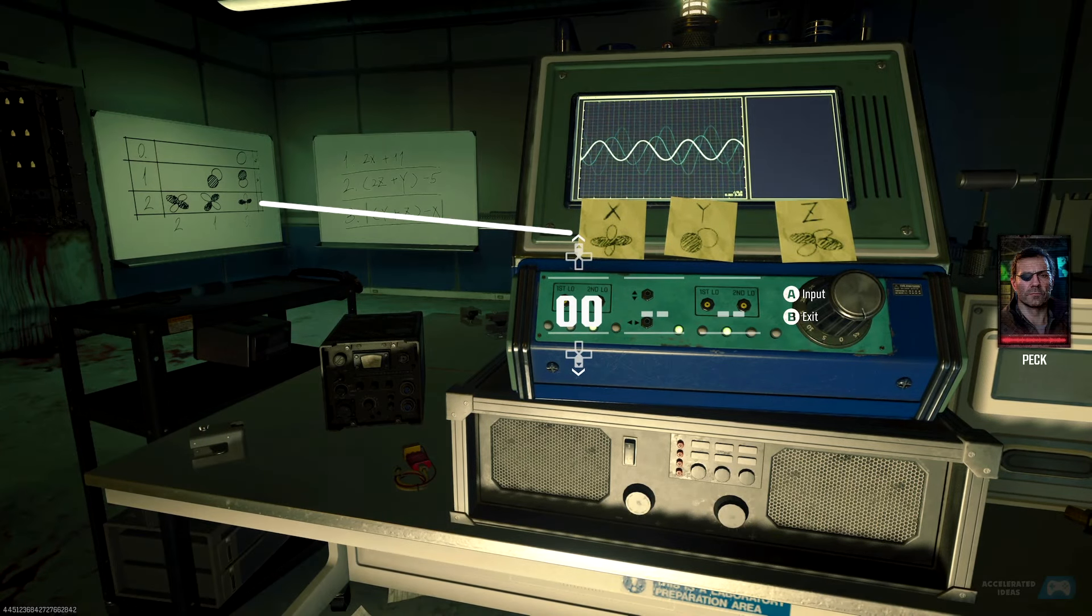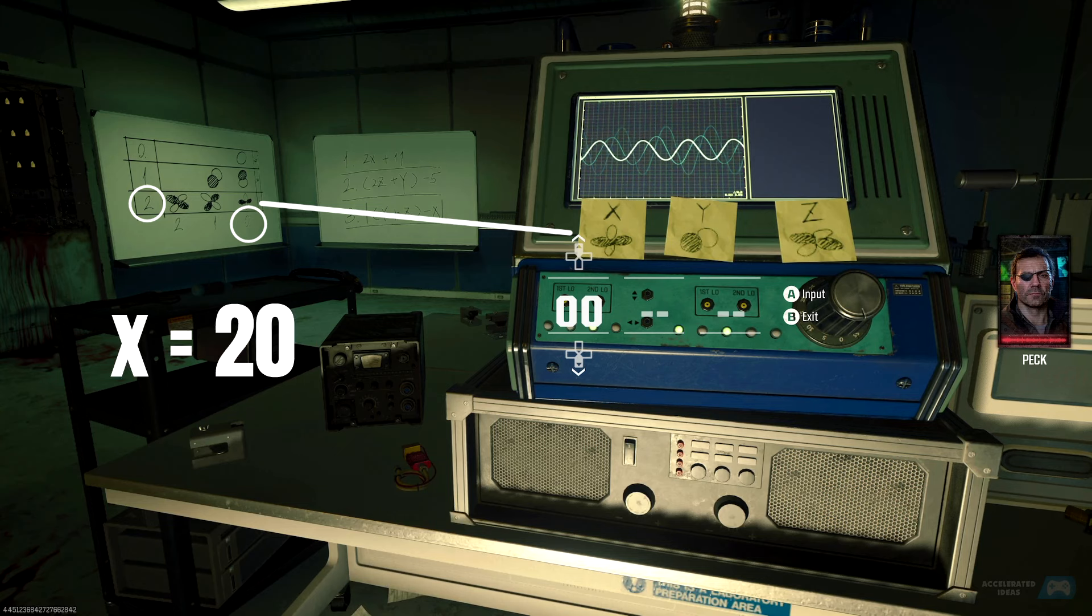We want to match the yellow note symbols with the white board on the left. Starting with X, this is in the bottom right-hand corner of my board. We take a note of the row it is in, then take a note of the column it is in, then take both numbers from this row and column, which are 2 and 0. Our X number is equal to 20.